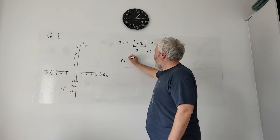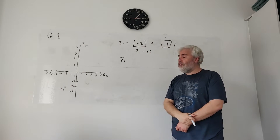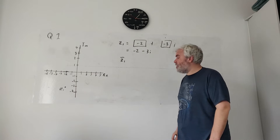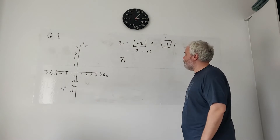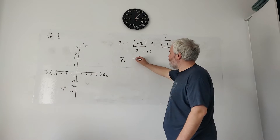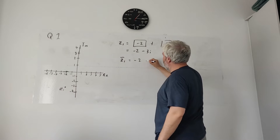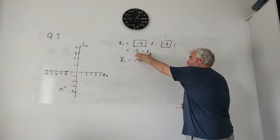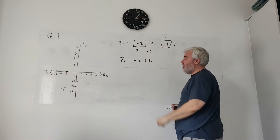The second part asks us for Z1 conjugate — the line above indicates a conjugate. Conjugates are useful in algebra and in complex numbers specifically for dividing. It comes up every year, so you need to learn how to do it. The conjugate of this number — once you get to a simplified complex number — you just change the sign of the imaginary part.